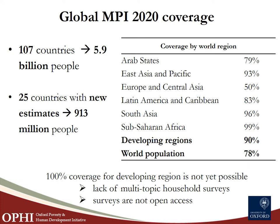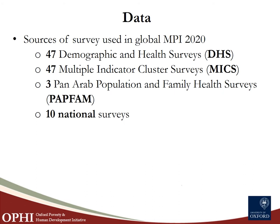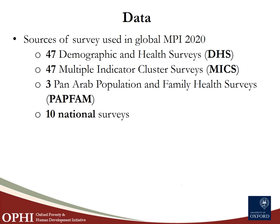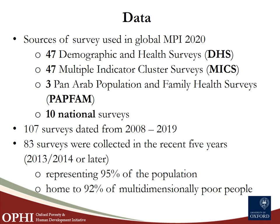We lack 100% coverage because multi-topic household surveys are unavailable or not open access in some countries. The Global MPI primarily draws data from two major sources: the Demographic Health Surveys (DHS) and the Multiple Indicator Cluster Surveys (MICS), along with PEPFAR and national surveys. Surveys were fielded from 2008 to 2019. Importantly, 83 of these surveys, representing 90% of the population covered and 92% of the MPI poor, were fielded in the recent five years.